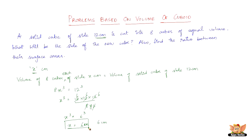Now let us find the ratio between their surface areas. Let the surface area of the solid cube of side 12 cm be S1 and the new surface area be S2. The surface area of a cube is 6 times the side squared, so S1 is 6 × 12 squared and S2 is 6 × 6 squared.